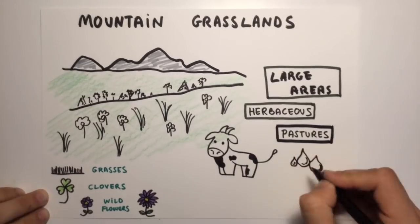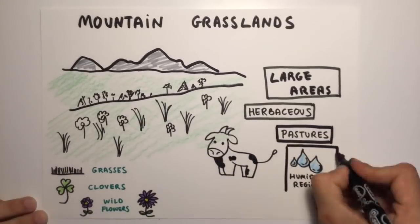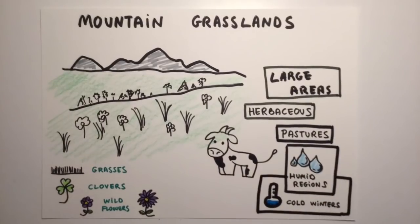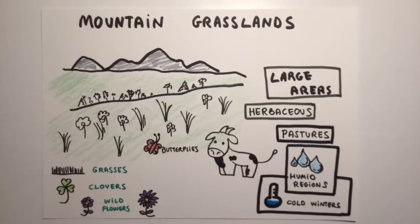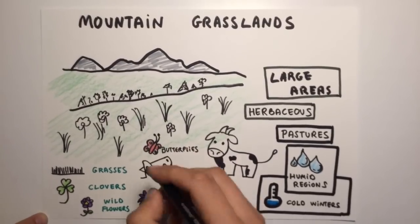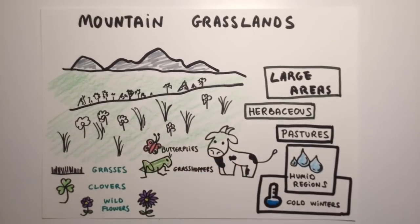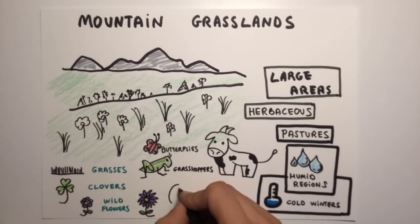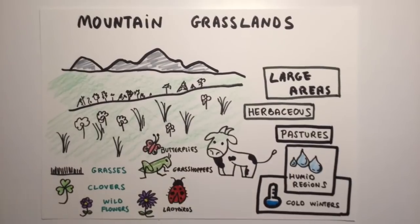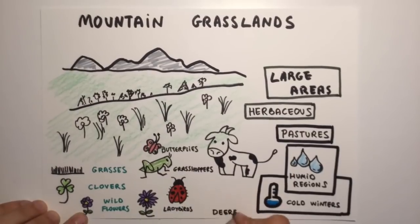They grow in humid regions with cold winters. Mountain grasslands is a good place to live for animals like butterflies, grasshoppers, ladybirds and deer.